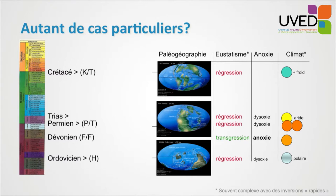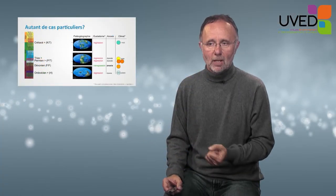Each crisis is a different case. Looking at continent distribution across three crises — Ordovician, Permian, and Cretaceous — we see that paleogeographical aspects were different. In the Permian, the continents were still grouped together in a single mass, whereas during the Cretaceous they were already separate. In terms of eustasy — sea level — most crises correspond to times when sea level decreased and the continental platform disappeared. Only one, in the Devonian, is a transgression period. Regarding water oxygenation, we very often find lower oxygen levels, dysoxia and even anoxia — the water was very poor in oxygen during the Devonian.